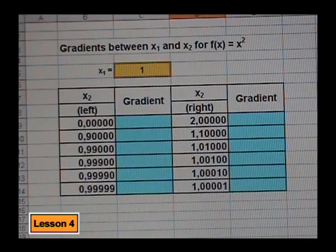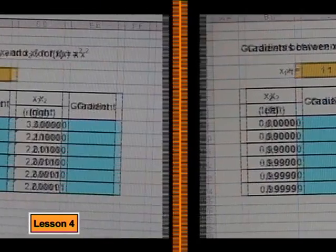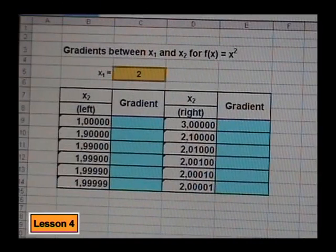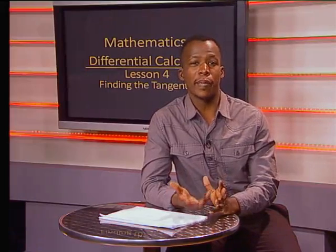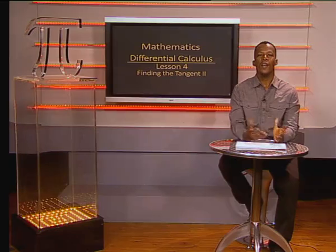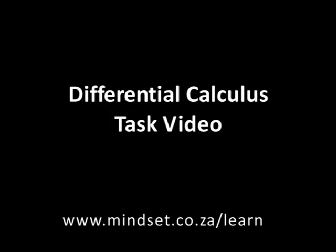The power of this spreadsheet is that we can now repeat all of our work for any point on the function f(x) = x squared by simply changing the value in the yellow cell. Pretty cool — can I try? Sure, but I think we should leave this problem here for now; you can give it a go next time. Thank you, Donovan and MacGyver. We have a good idea of what we have to do with two points in order to find the gradient of the tangent at one point on the curve. Join us again to explore this in more detail. Remember to try the task video at the end of this series and to look at our website, www.mindset.co.za/learn for more resources. Goodbye.